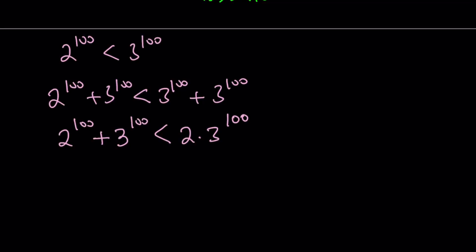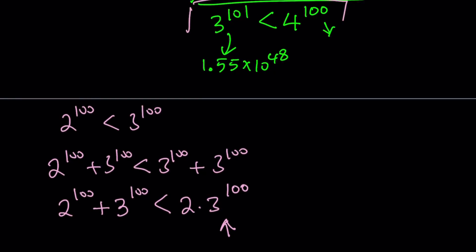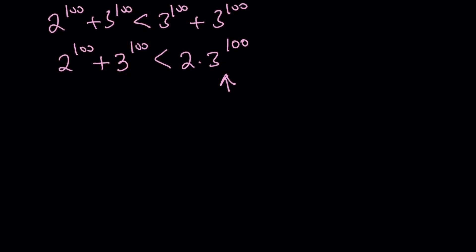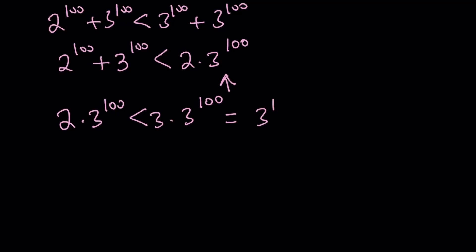So we have this relationship, and obviously I do want to compare this to 4 to the power of 100. I can do that by using this, but first of all I have to compare this to something else. Since we know that 2 is less than 3, it means 2 times 3 to the power of 100 is less than 3 times 3 to the power of 100. You start with 2 is less than 3 and multiply both sides by 3 to the power of 100, and this will be a true inequality. But when you multiply 3 times 3 to the power of 100, you're going to get 3 to the power of 101.